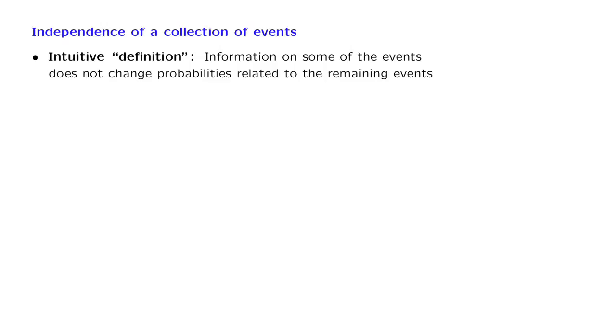For example, if I want to say that events a1, a2, and so on are independent, I would like relations such as the following to be true. The probability that event a3 happened and event a4 does not happen remains the same even if I condition on some information about some other events. Let's say if I tell you that a1 happened or that both a2 happened and a5 did not happen.